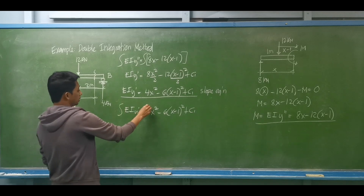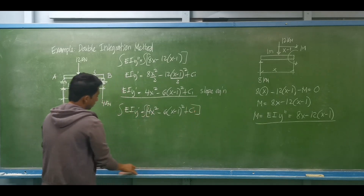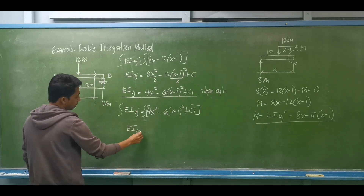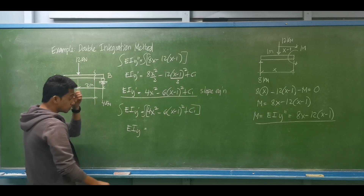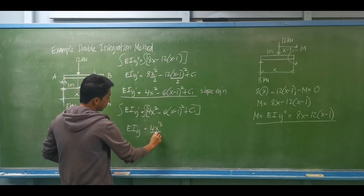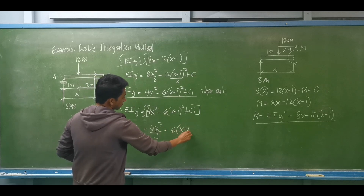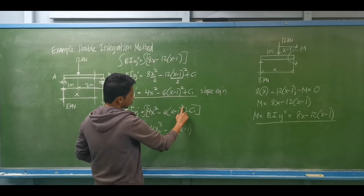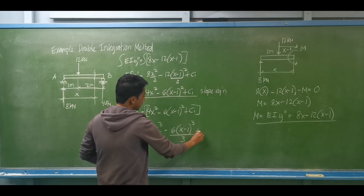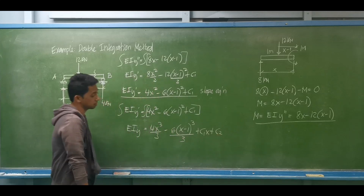We now integrate both sides again. EI y prime becomes EI y. So EI y is now equal to 4x cubed divided by 3 minus 6 times (x minus 1) raised to 3, divided by 3, plus C1x plus the second arbitrary constant C2.